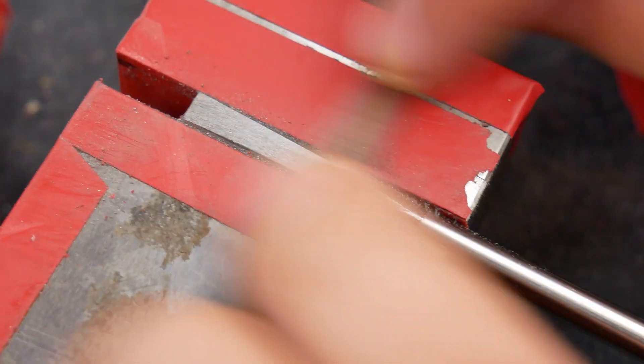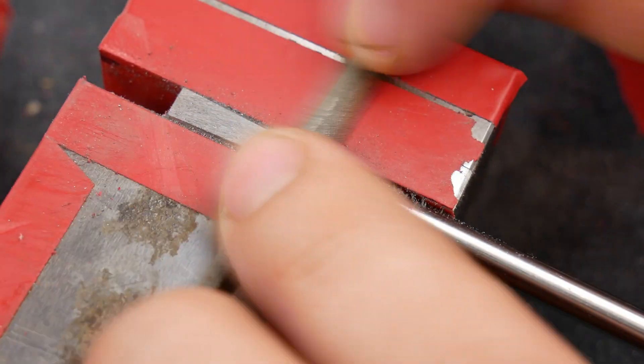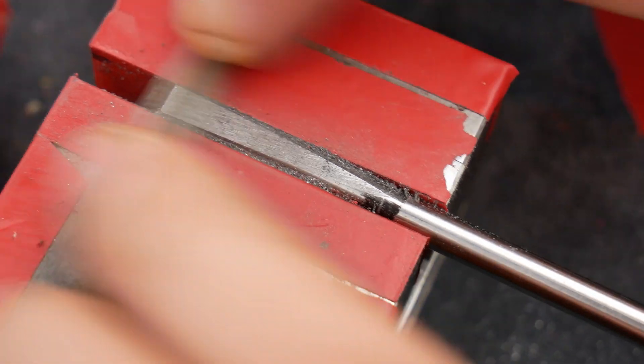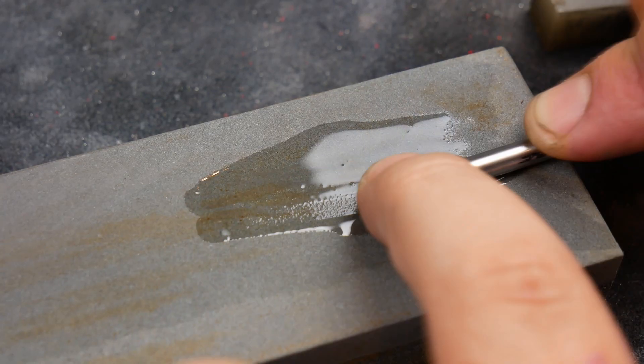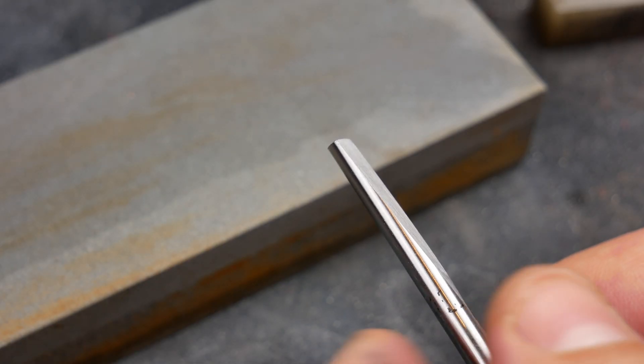It's much easier to see and feel high spots when draw filing, and using a file with a fine cut, I was able to file the taper flush with the cross slide. A few strokes on a stone and we're ready to move on to the next side.